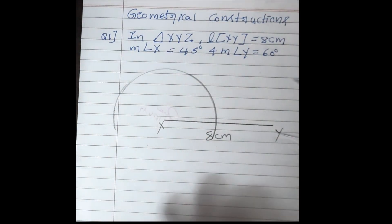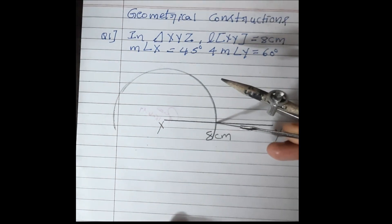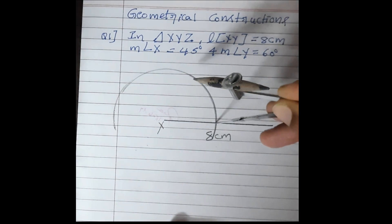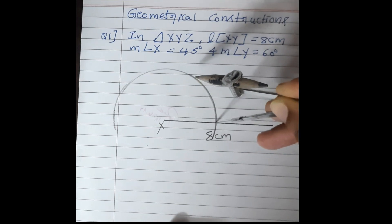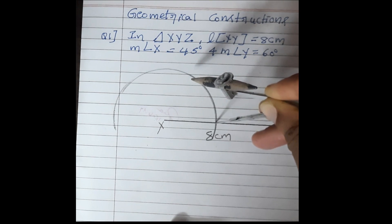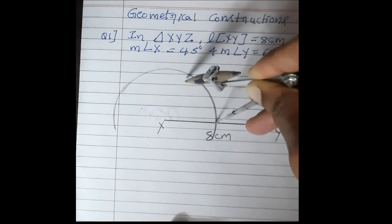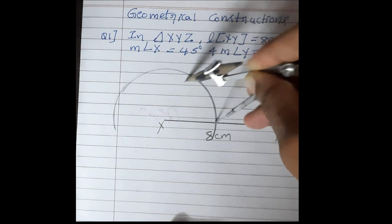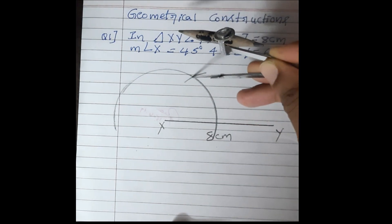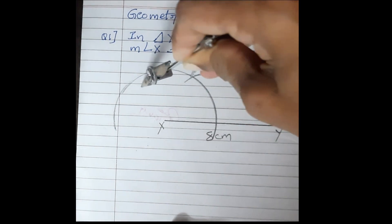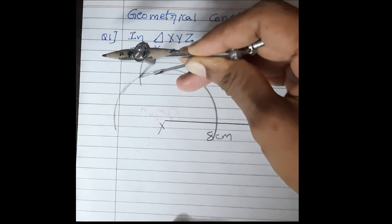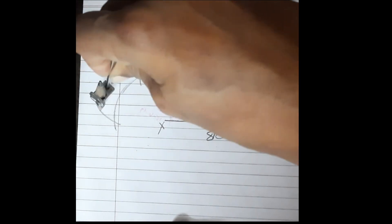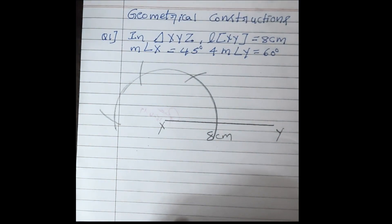So now this is 0 degrees. This arc we will cut into 3 parts. We should not change the measurement. With the same measurement, we have to cut this semi-circle into 3 parts, 0 to 60 degrees 1 arc, 60 to 120 degrees second arc, 120 degrees to 180 degrees other arc.